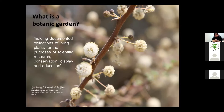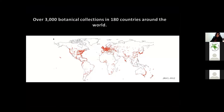In a quick definition of a botanic garden — and this is the most commonly used definition — it is a place that holds a documented collection of living plants for the purpose of research and conservation, and also display and education for the public. According to the latest report, there are over 3,000 botanical collections in about 180 countries around the world.